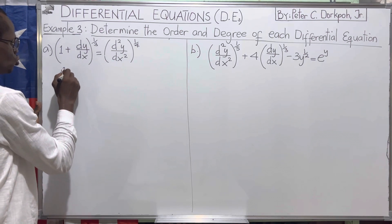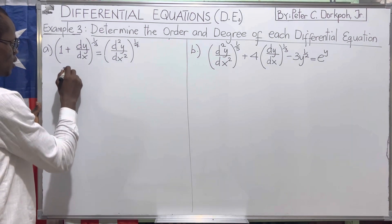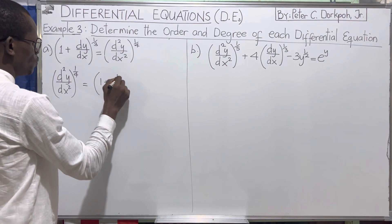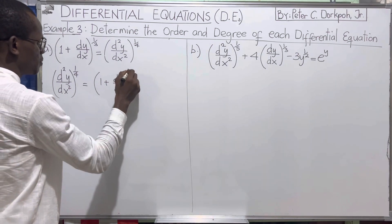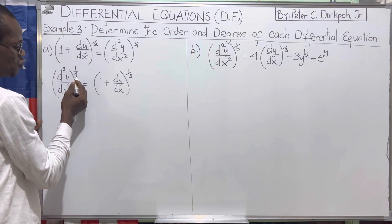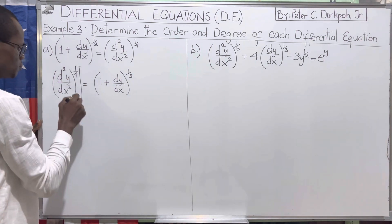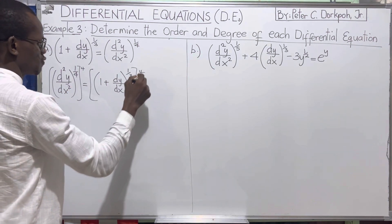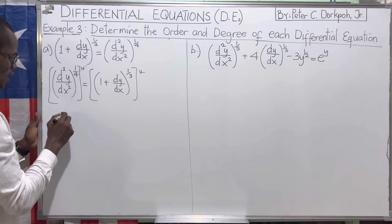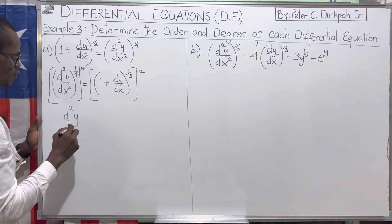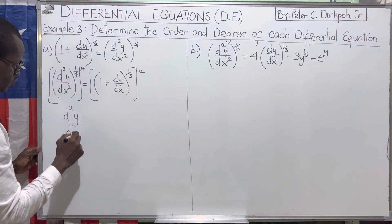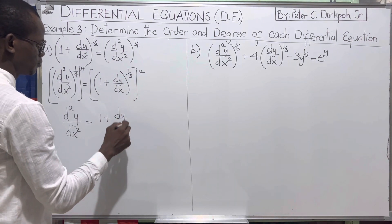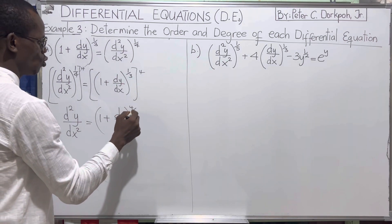So we have d²y/dx² raised to the power one over four equals one plus dy/dx raised to the power one over three. To easily get rid of this four, we can just raise both expressions to four. This will cancel this one. So you have d²y/dx² now equal to one plus dy/dx, all raised to the power four over three.